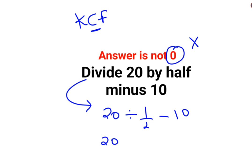C stands for changing the division sign to multiplication. F stands for flipping or taking the reciprocal of 1/2, which is 2, minus 10.